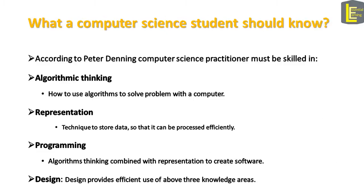So what should a computer science student learn in this course and any other course? Peter Denning suggests that computer science practitioners must be skilled in the following areas. The first one is algorithmic thinking — you must learn how to use algorithms to solve problems with a computer. The second one is representation, which refers to techniques to store data so that it can be processed efficiently.